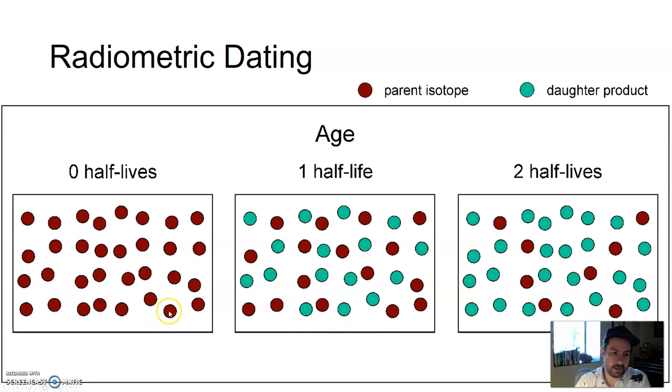Imagine we have a sample, and it's all uranium, all these parent isotopes. After one half-life, half of the uranium has now changed to the daughter product, lead. So, it's half and half. After another half-life, so two half-lives, half of what's left decays to the daughter product.